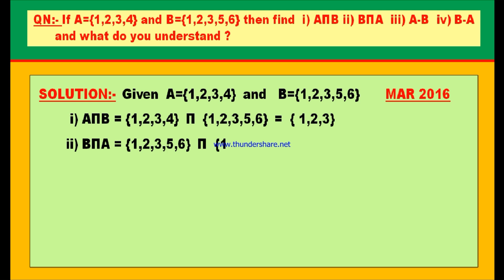Second bit: B intersection A. B = {1, 2, 3, 5, 6} intersection A = {1, 2, 3, 4}. Again, listing out the common elements gives 1, 2, 3 only. So B intersection A = {1, 2, 3}.